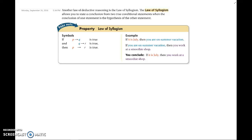The last law we're going to discuss in this section is the law of syllogism. It's another law of deductive reasoning, where deductive reasoning is using facts, properties, or definitions. The law of syllogism allows you to state a conclusion from two true conditional statements — so you need to have two true conditional statements.